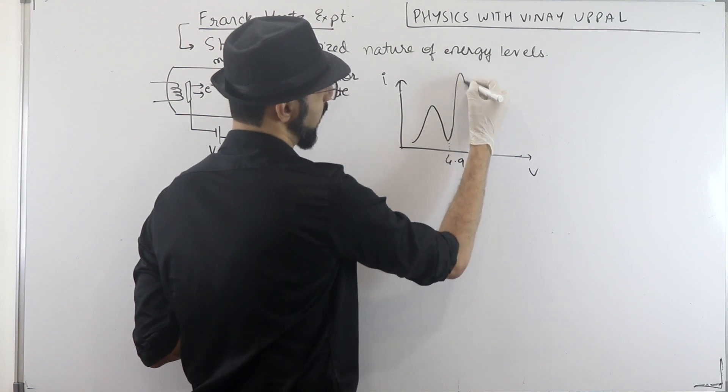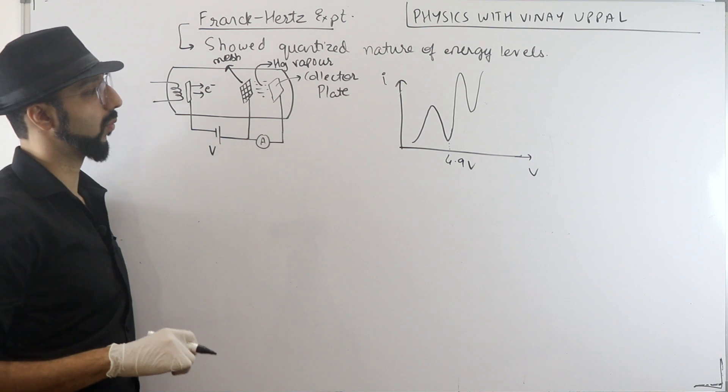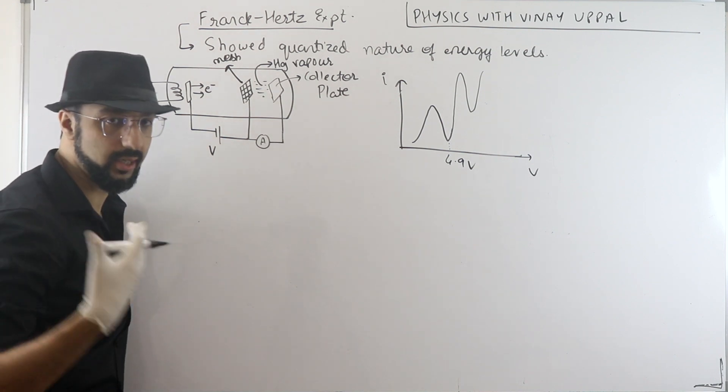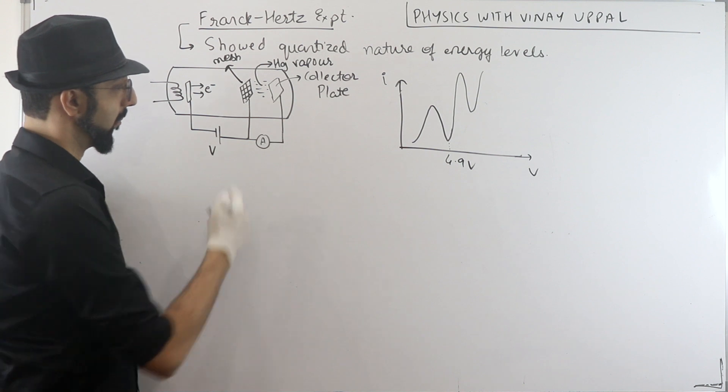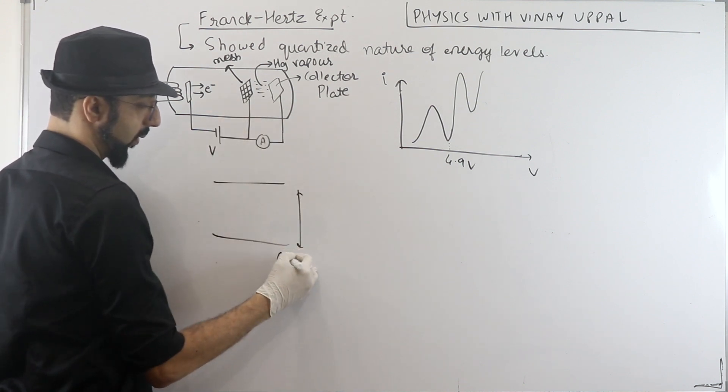Then again it dropped. So what happened was basically what really happens is the mercury energy levels, the energy gap n equal to 1 and n equal to 2.